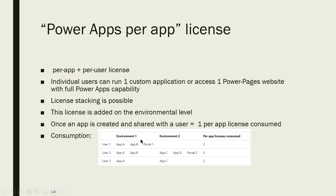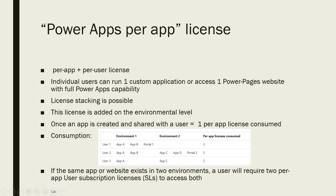This license is added at the environment level. Once you buy it, it lives in your Power Platform environment. You create an app and share it with a user — that sharing is considered a consumption of the license. For example, User 1 using App A, App B, and Portal 1 in Environment 1 consumes three app licenses. User 2 using App A and B in Environment 1 plus App C, D, and Portal 2 in Environment 2 consumes five licenses. User 3 using App A in Environment 1 and App C in Environment 2 consumes two licenses. Important: if the same app exists in two environments, a user needs two per-app user subscription licenses to access both.